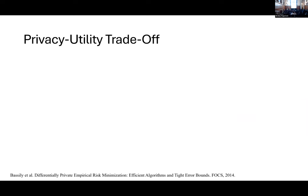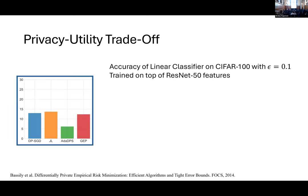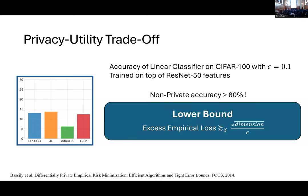Now, what is the problem with differential privacy? One of the problems is that the performance can drop horribly. Suppose that we have a pre-trained ResNet 50 and we extract the features of a data set like CIFAR-100. If we train a linear classifier on top of these features with an epsilon guarantee of 0.1, what we obtain is an accuracy that can be lower than 15%. The problem is that the corresponding non-private accuracy is actually greater than 80%. This is an extreme drop in performance, and this is not just something that is observed empirically on one data set, but actually there is some theory about this.